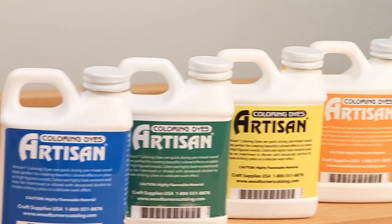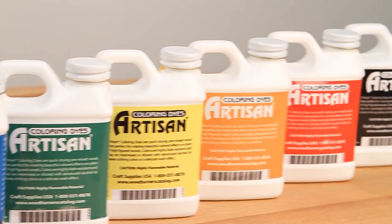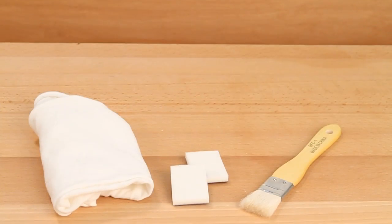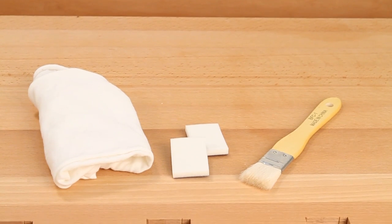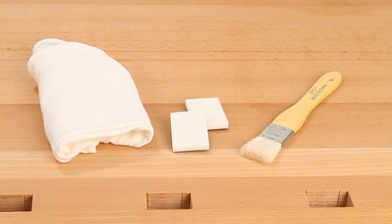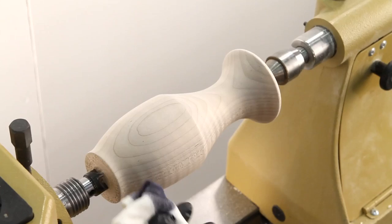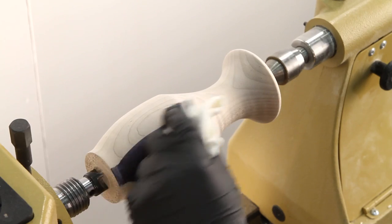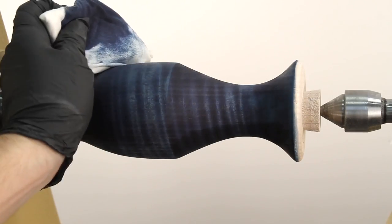The dyes we will use are pre-mixed alcohol-based artisan dyes. To apply the dyes, you can either use a cloth, sponge, or a brush. Simply coat the entire surface with a fair amount of dye and let it dry for 30 seconds between each coat.